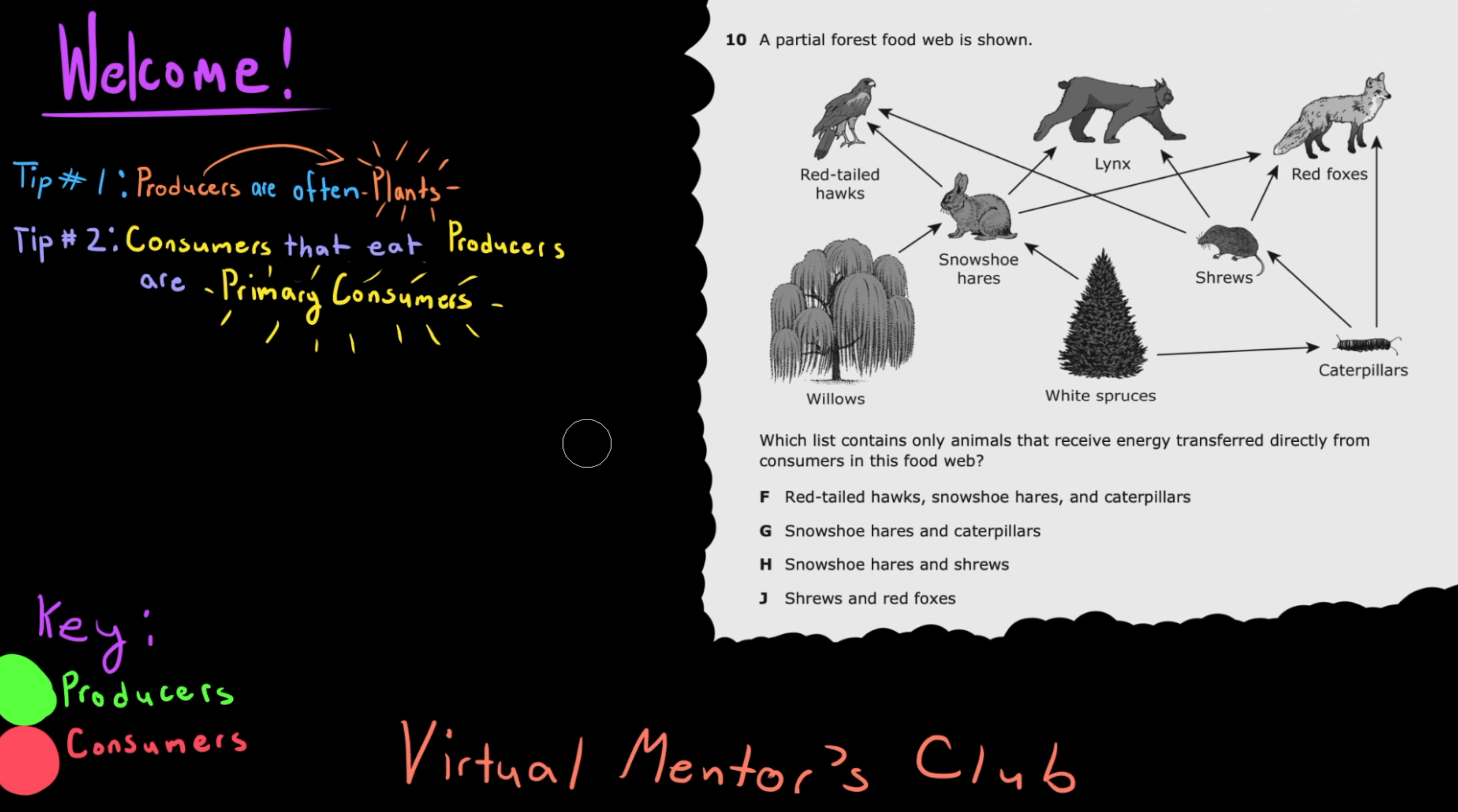To start, let's look at problem 10 of the 2019 5th grade science star, which covers a lot of key concepts regarding food webs in general.